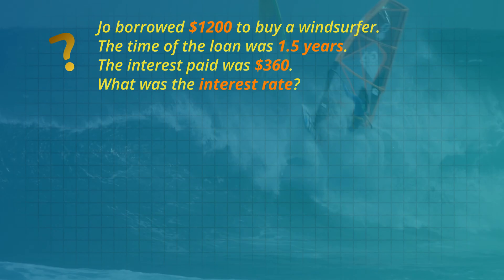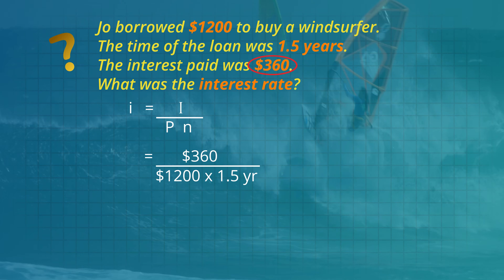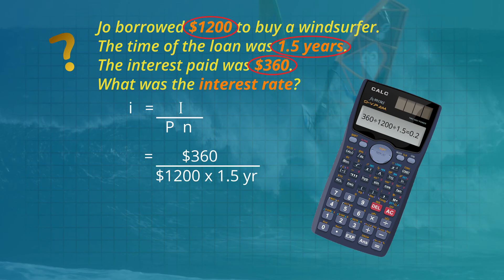Joe borrowed one thousand two hundred dollars to buy a windsurfer. The time of the loan was one point five years and the interest paid was three hundred and sixty dollars. What was the interest rate? The rule is small i equals big I divided by the other two. The interest is three hundred and sixty dollars, the principal borrowed is one thousand two hundred dollars, and the number of years of the loan is one point five years. So three hundred and sixty divided by one thousand two hundred divided by one point five is zero point two. But zero point two is a decimal, not a percentage, so we must multiply by one hundred to get the interest rate as a percentage of twenty percent.